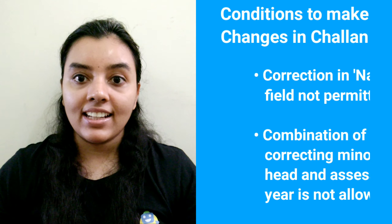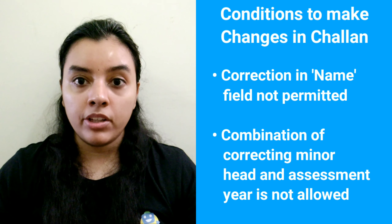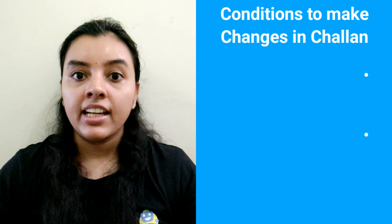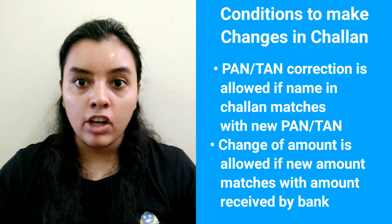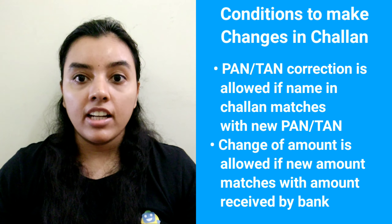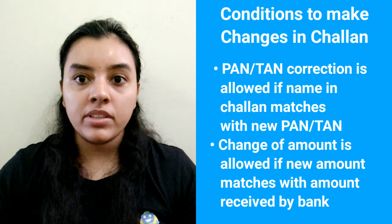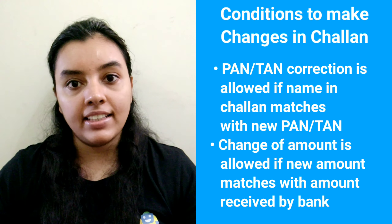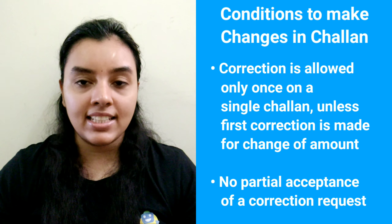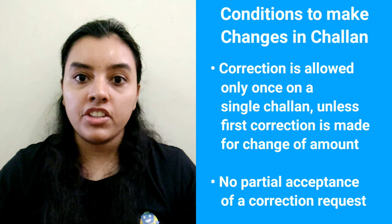The changes in the challan can be made by the banks subject to the following conditions: A correction in the name field will not be permitted. A combination of correcting the minor head and assessment year together is not allowed. A PAN or TAN correction is allowed provided the name in the challan matches with the new PAN or TAN. A change of amount will be allowed provided that the new amount matches with the amount actually received by the bank and credited to the government account. Correction is allowed to be done only once on a single challan, unless the first correction request has been made for a change of amount.